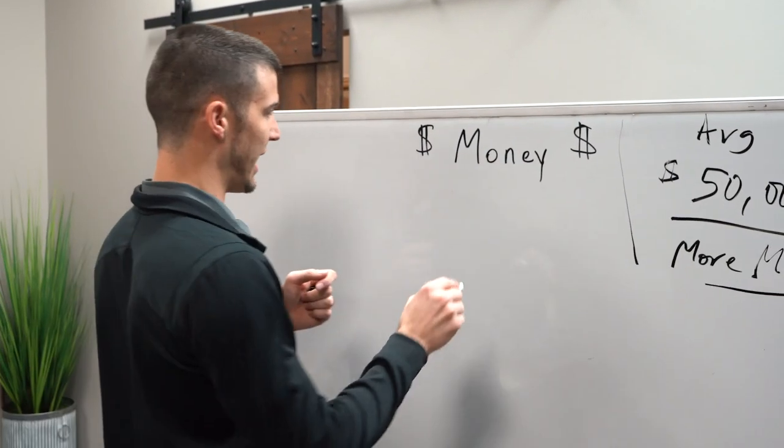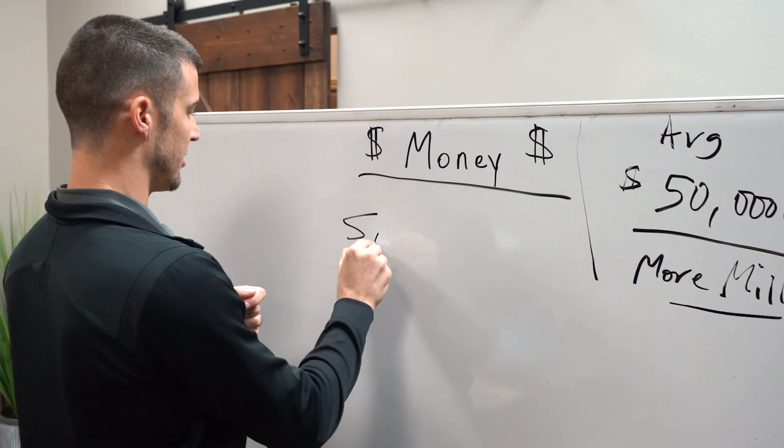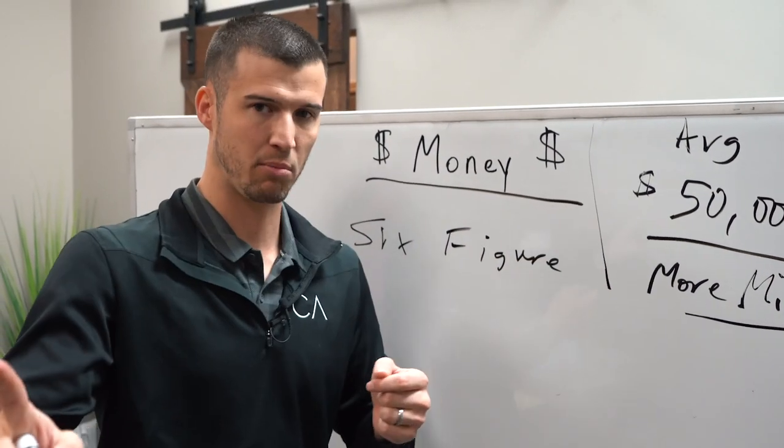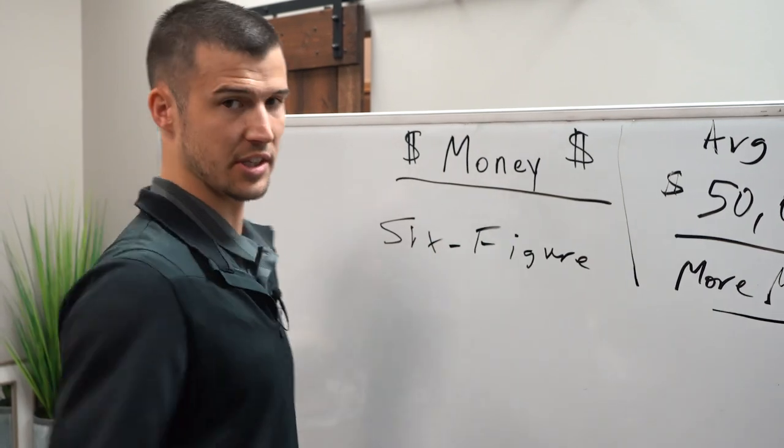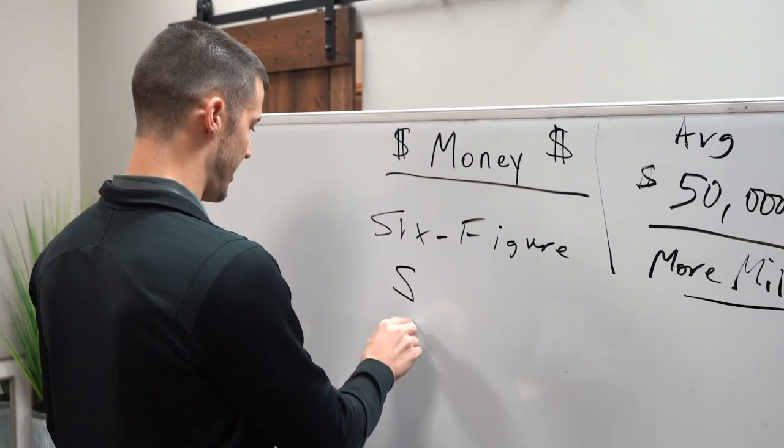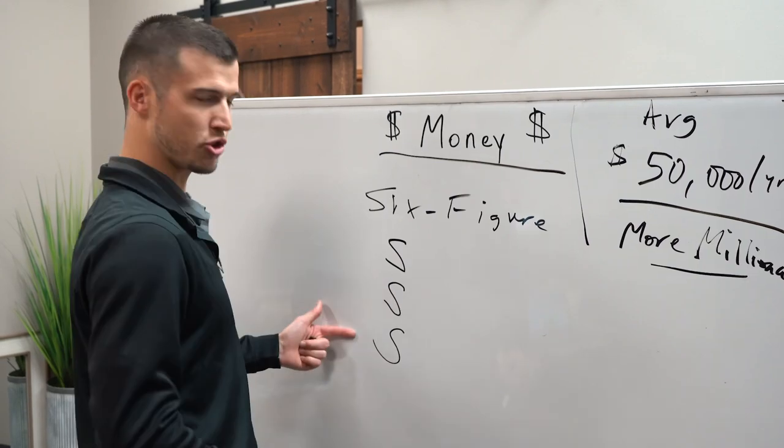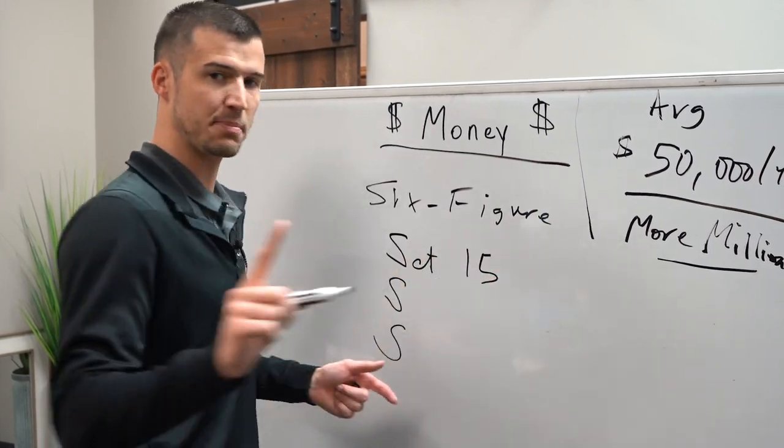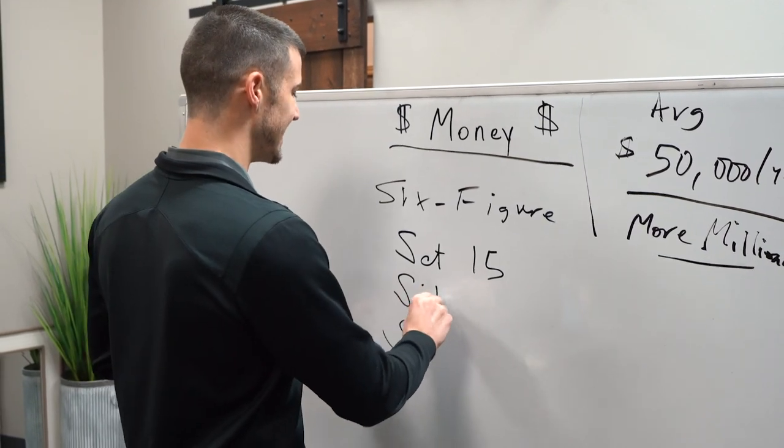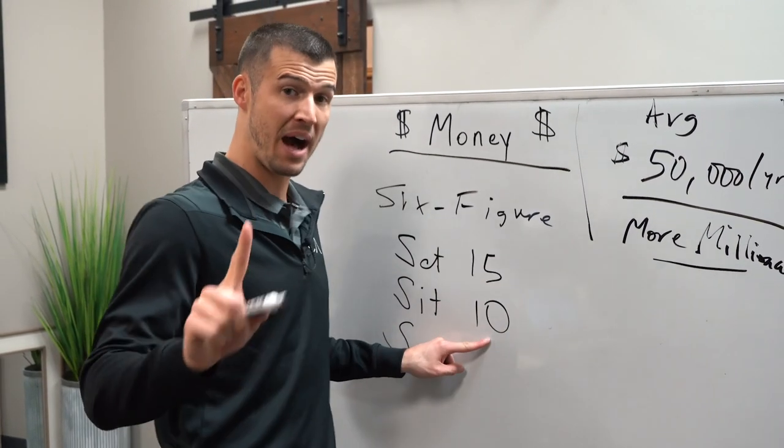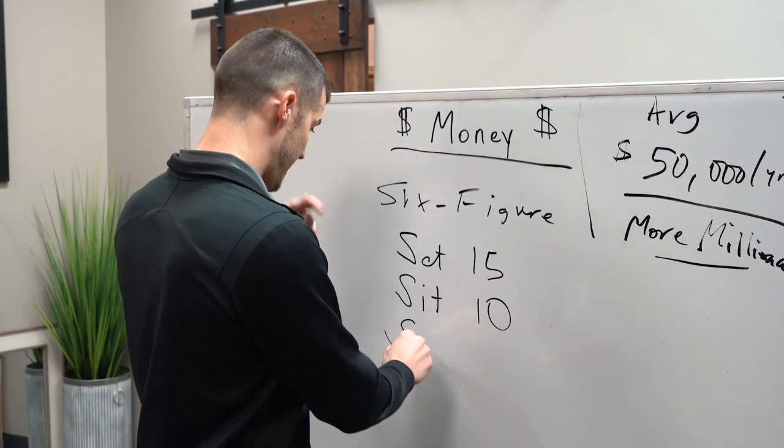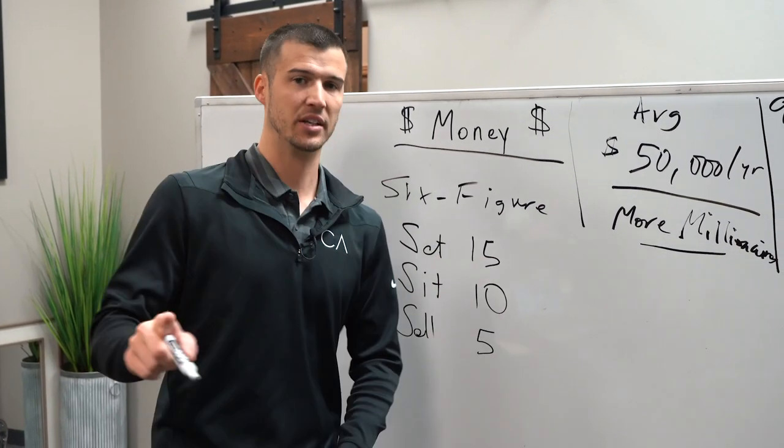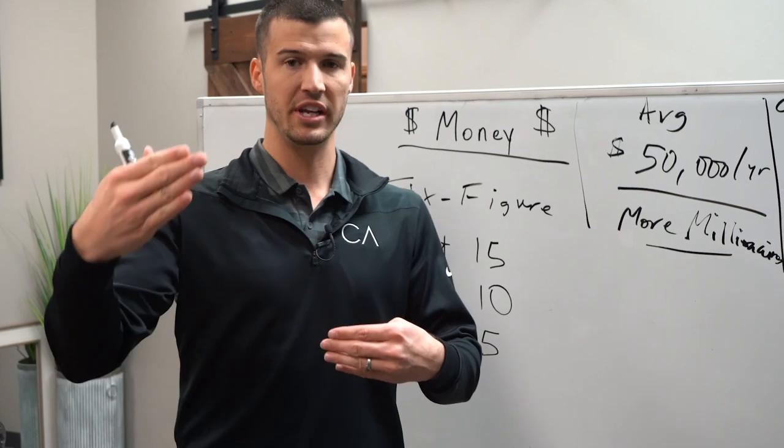So let's look at the six-figure sales system. That's a book I'm working on right now. I believe that every insurance agent should set 15 appointments per week. They should sit and ask 10 people to buy every single week. And that they should actually physically sell at least five policies, applications, every single week.